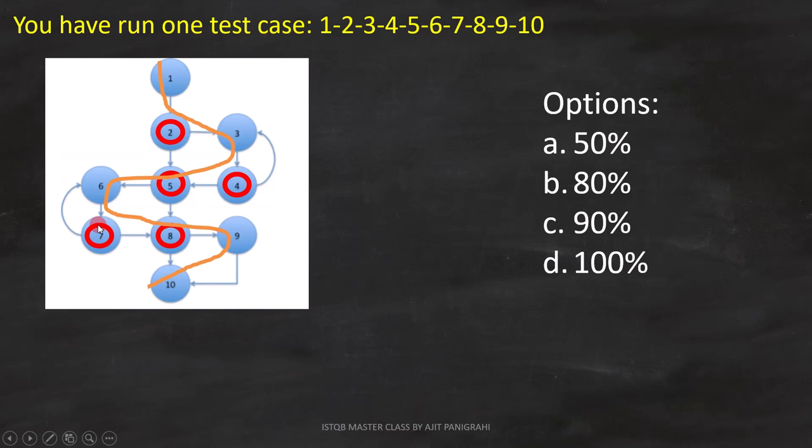The fourth decision bubble is 7. Here, the path from 7 to 8 is covered, but the path from 7 to 6 is not covered.